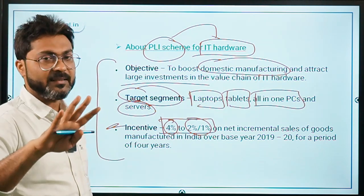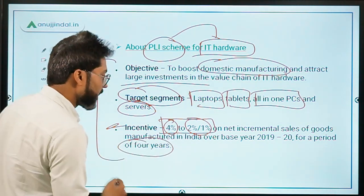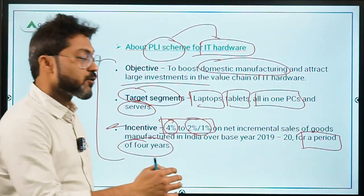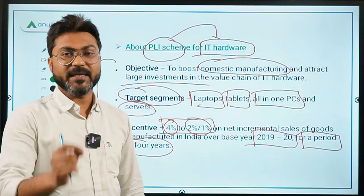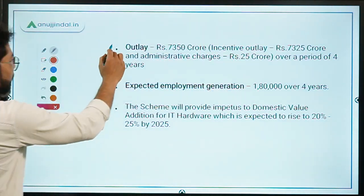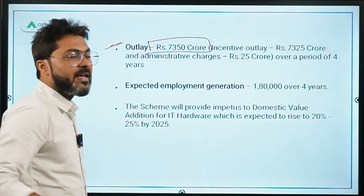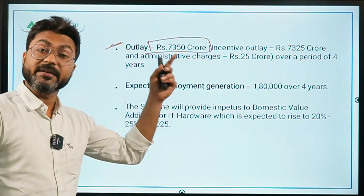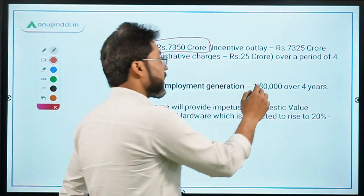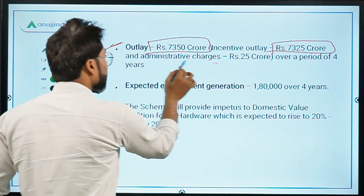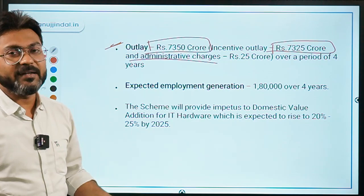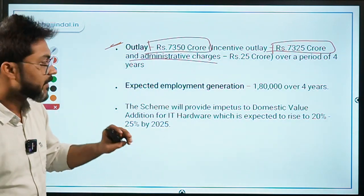The base year for IT hardware is also 2019-20. The total outlay for this scheme is ₹7,350 crores. Out of this, ₹7,325 crores is the incentive outlay while the remaining ₹25 crores is for administrative charges.